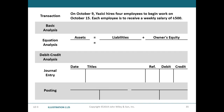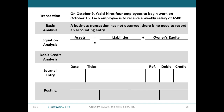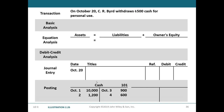On October 9, Yaziji hires four employees to begin work on October 15. Each employee is to receive a weekly salary of $500. When Yaziji hires four employees to begin work on October 15, this transaction will not have any journal entry — we don't record it. It's because the four employees will start work on October 15 and we will pay them salary after they work for a week. On October 9, Yaziji just hires the employees, so there's no transaction to record.